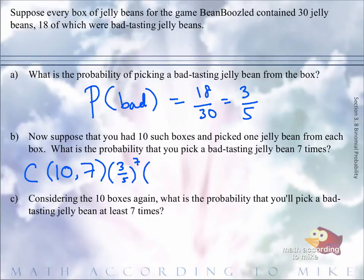And the probability of not picking a bad bean, well, the probability of picking a bad bean is three-fifths. The probability of not is two-fifths, the complement. And if we have 10 boxes and we want seven bad beans, then that means we want three that are not bad beans.